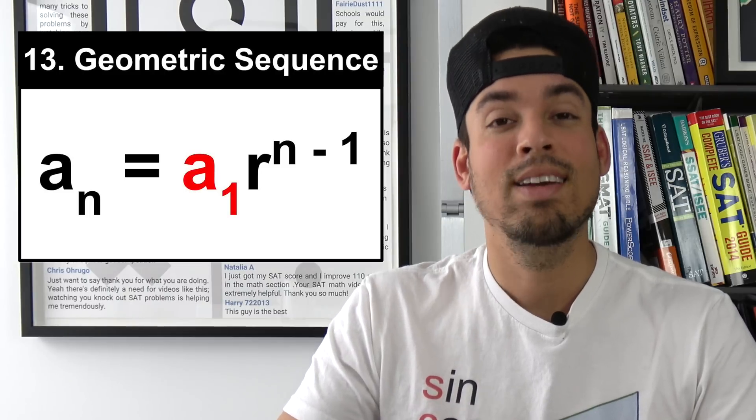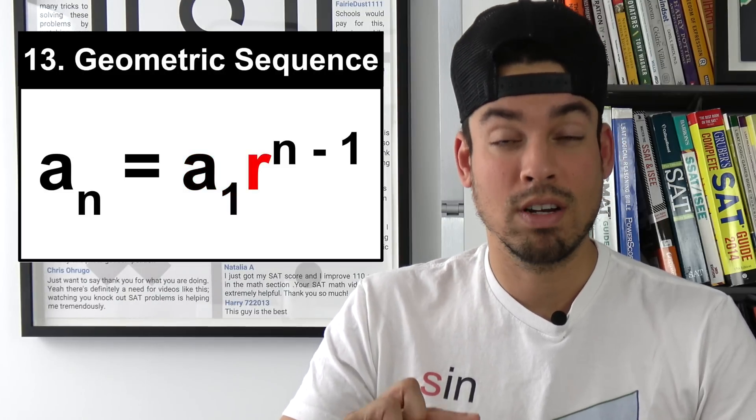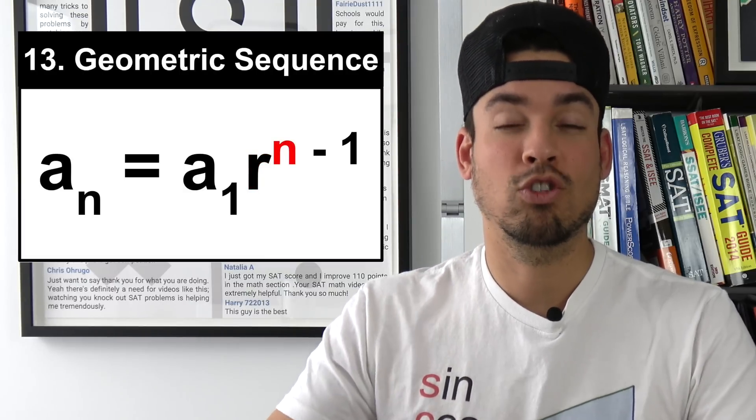So in this formula again a sub 1 is the first term in the sequence, r is that common multiplier or common ratio and then of course n is the term or number of term that you're trying to find.